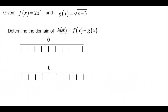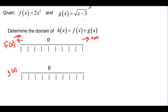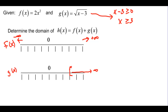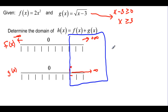Two new functions: determine the function h of x by f of x plus g of x. If f of x is x squared, then it goes to negative infinity and positive infinity. If g of x has a radical, what's underneath has to be greater than or equal to 0, so x has to be greater than or equal to 3 for g of x. It starts at 3 and goes to infinity. The overlap of these two domains gives h of x a domain from 3 to infinity.